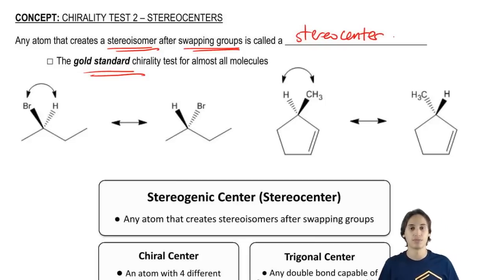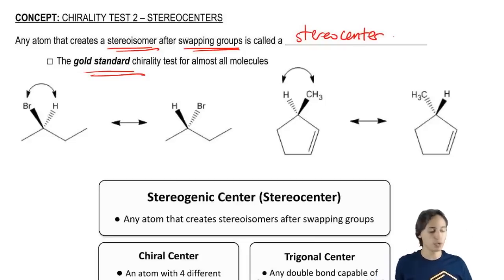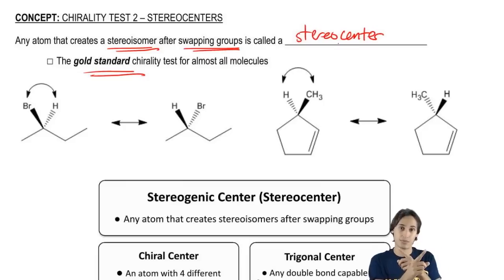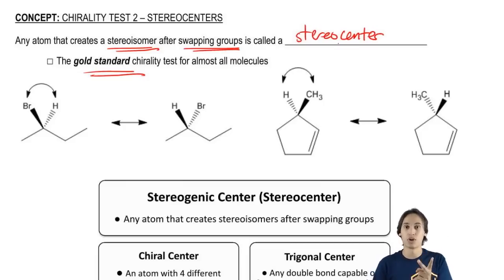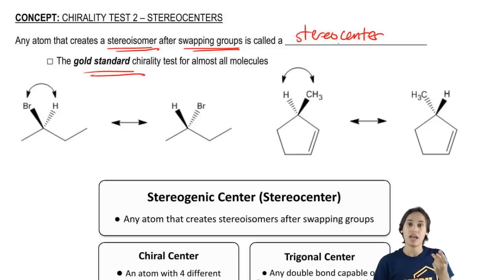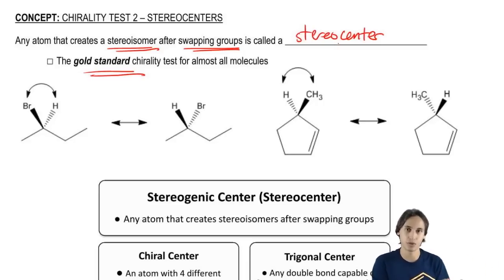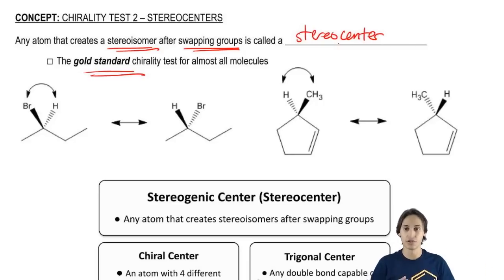So what is that definition? Basically, what I'm trying to say here is that if you swap any two atoms on the same carbon — if you swap their position — and you wind up getting a different molecule, or a molecule that has a different shape afterwards, that is called a stereocenter.